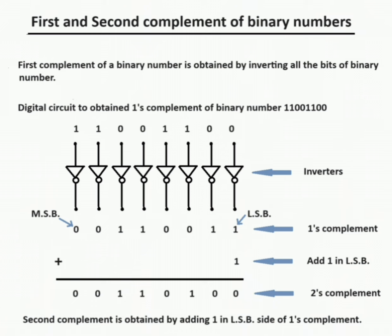By inverting all bits, the first complement is 00110011. Then by adding one in the least significant bit, the second complement is 00110100. Okay, thank you.